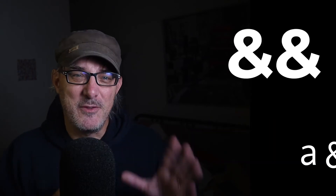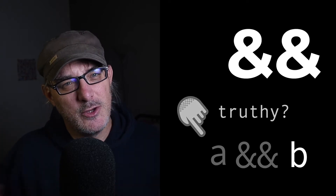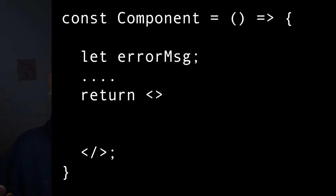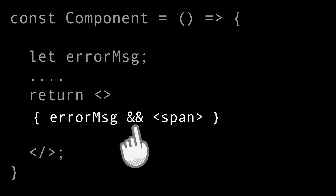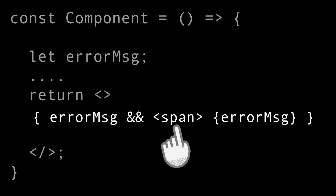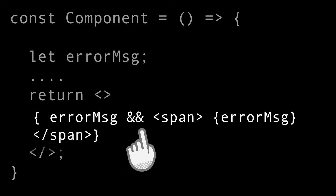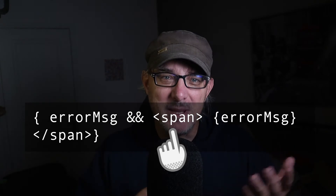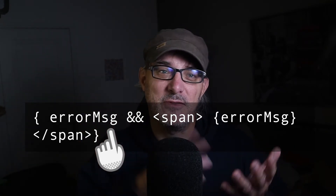The AND operator has exactly the opposite behavior: if the first term is truthy, the AND operator returns the second term. In React, imagine we have a variable called error that might or might not contain an error message. In the JSX part of our code, we can write: errorMessage && <span>{errorMessage}</span>. The AND operator only returns the span if the error message variable is truthy — we only show the span if there is actually an error.